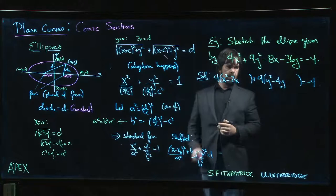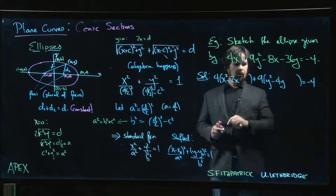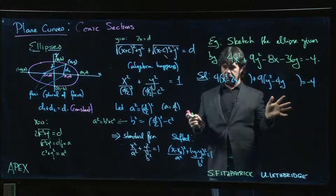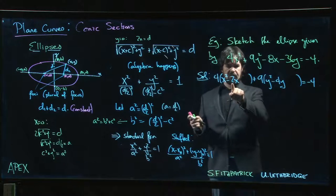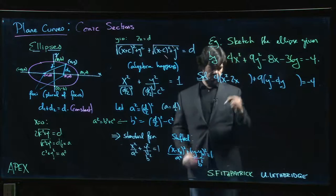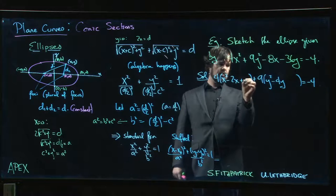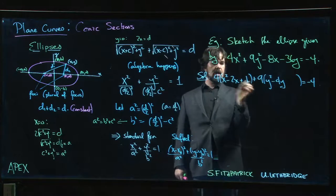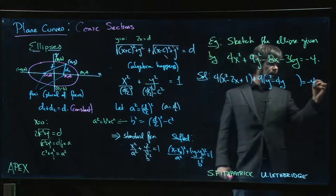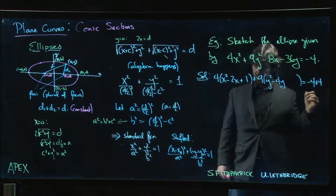Now of course what we want to do is put a constant in here that gives us a perfect square, and standard operating procedure for completing the square: half of this number, square it, and stick it in. So half of 2 is 1, 1 squared gives 1, right? But I've really done 1 times 4, so I've added 4 on this side, so I should also add 4 on the other side to compensate.